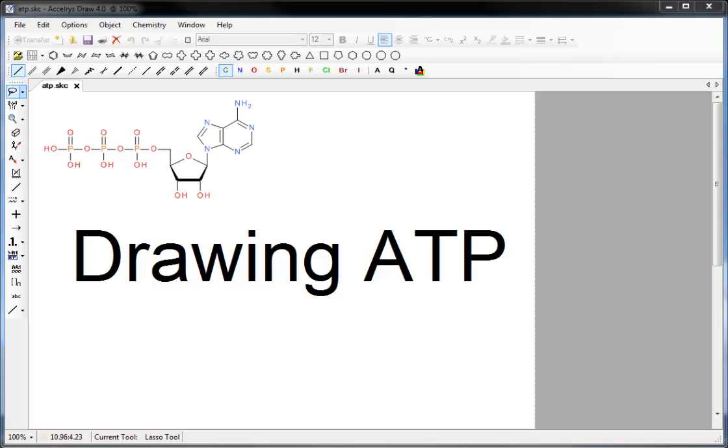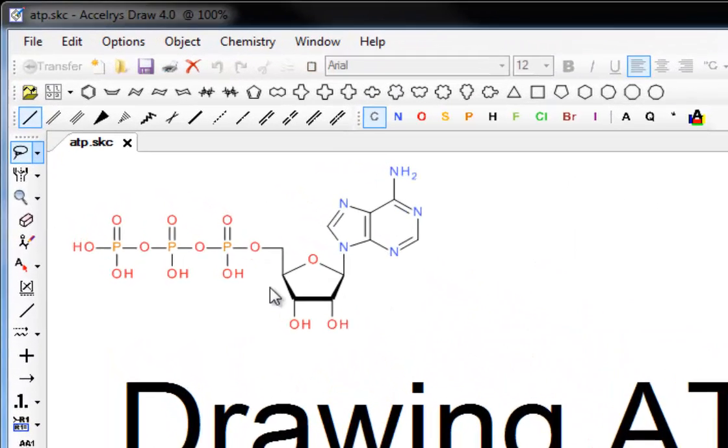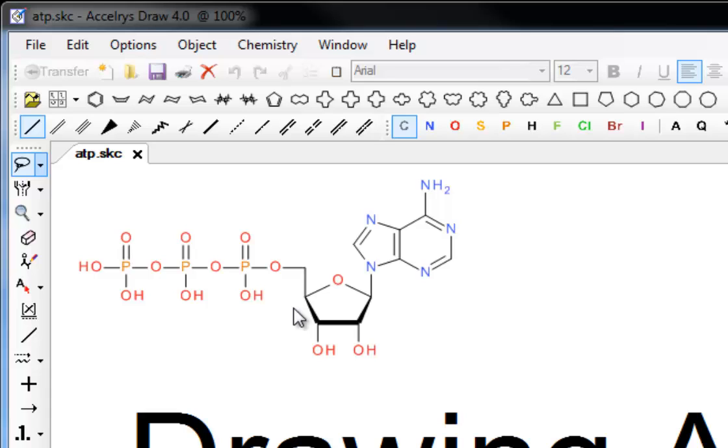In this video we're going to look at using ChemDraw to draw adenosine triphosphate. If you recall, it consists of three parts: the base adenine bonded to a ribose sugar and then the three phosphate groups. The base and the sugar together form adenosine, hence adenosine triphosphate.